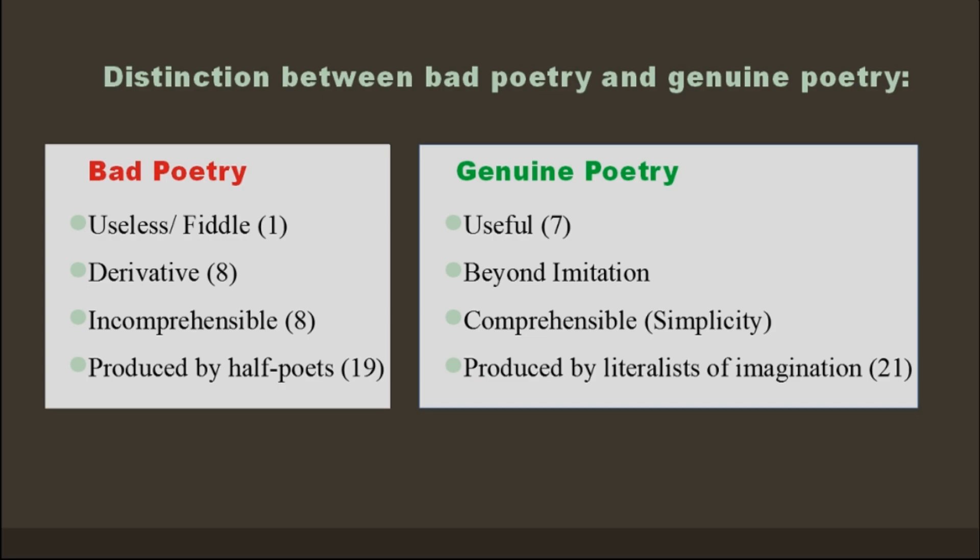The second point Moore argues is that bad poetry is bad because it is derivative and imitative in nature. Some poets copy from great poets and try to make their own version, but that is just false — it shows no intellect or originality, which is important in poetry. In line eight she mentions: 'when they become so derivative as to become unintelligible.' Derivative poems are changed in ways to hide or disguise that they've been taken from somewhere else, but in doing so they become more unintelligible — you cannot understand them, and they show no originality or intellect.